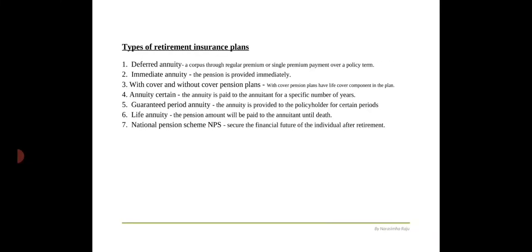There are various types of retirement insurance plans: deferred annuity, immediate annuity, with cover and without cover pension plans, annuity certain, guaranteed period annuity, life annuity, and national pension scheme. The first type is deferred annuity — a deferred pension scheme allows you to accumulate a corpus through regular premiums. After the completion of the policy tenure, the pension is provided to the insured. The deferred pension scheme offers various benefits to the insured person.